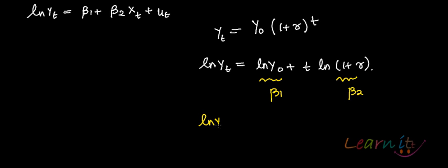You write this as log of Yt equals to beta 1 plus beta 2 t. So your model is basically this log of Yt equals to beta 1 plus beta 2 t plus you add the error term. This t is the time variable, not time trend.